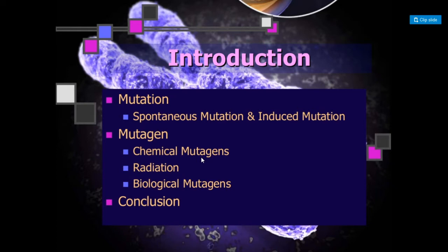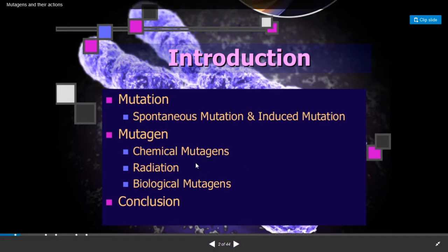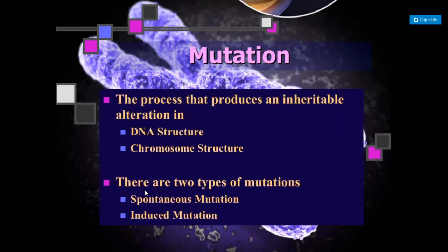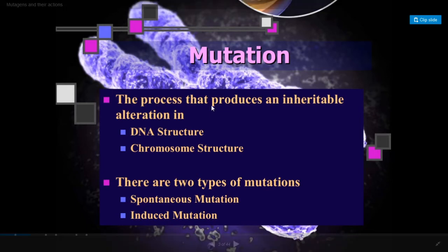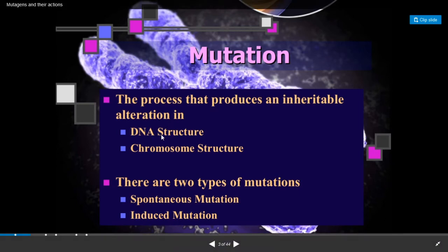Mutagenic agents are of three different types: one is chemical mutagenic agents, or simply called mutagens; the second is radiations; and the third is biological mutagenic agents. Mutation is the process that produces inheritable alterations or changes in DNA structure or in chromosome structure.